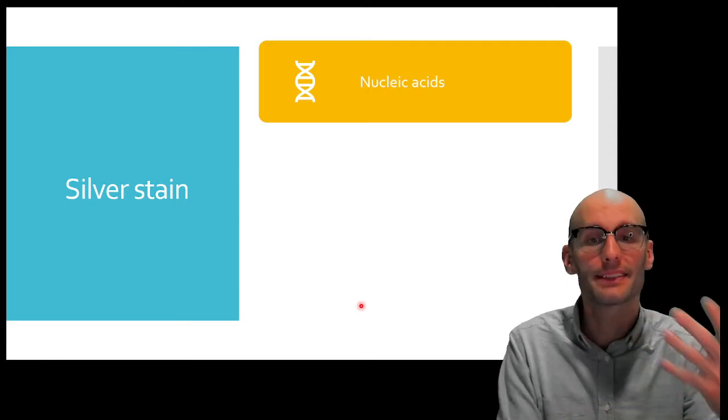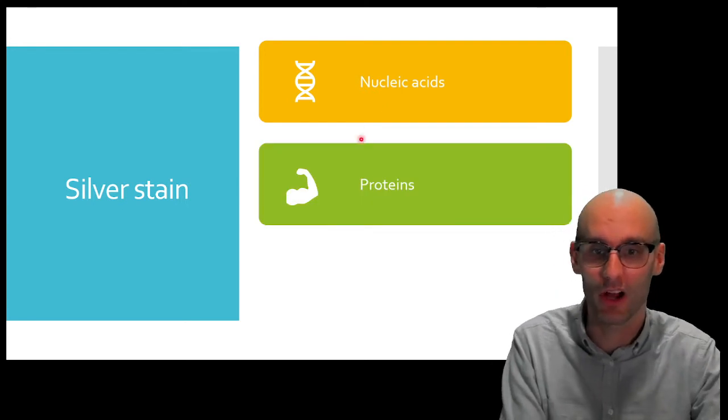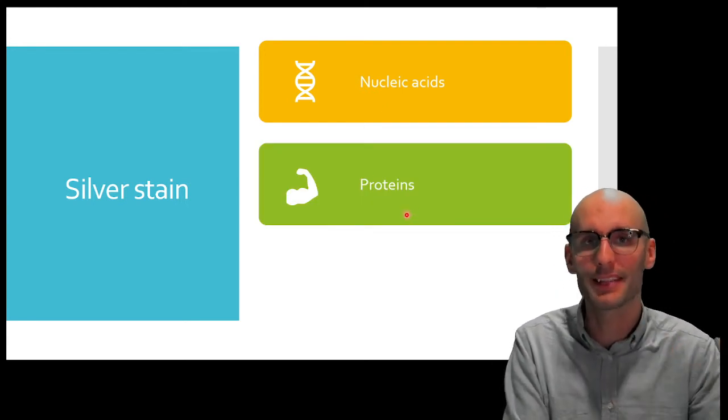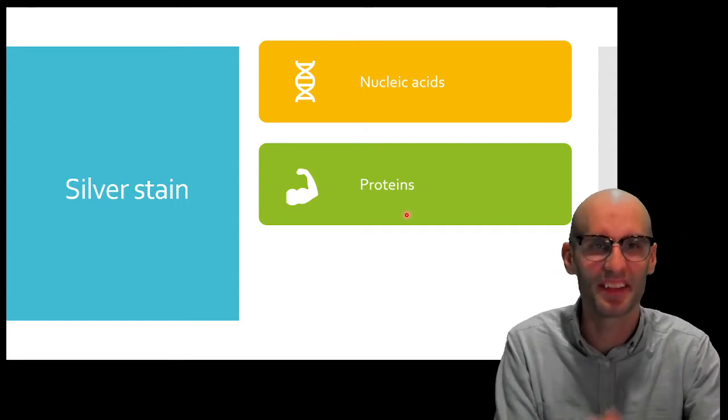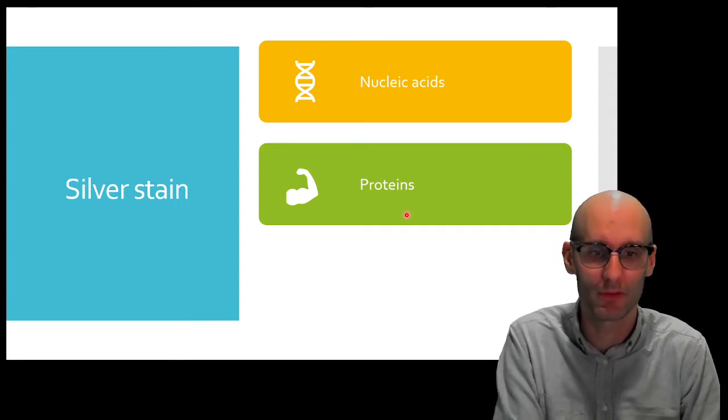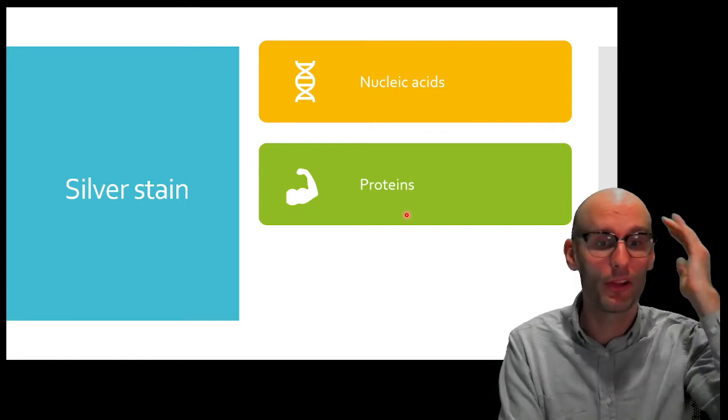So, you can kind of see how silver is able to stain DNA. But it's also able to stain lots of other things. So, it can stain nucleic acids because they have a negative charge because they donate their hydrogen ion. But proteins also have acidic side chains that can donate their hydrogen ions and become negatively charged. And they've got other side chains as well that can interact with the silver molecule. And so, it can stain proteins as well, which is what we saw in that amyloid blot there.